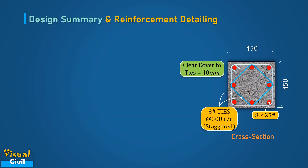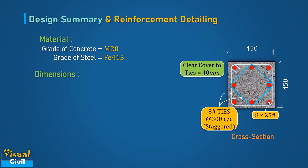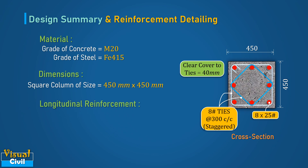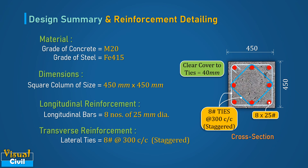Finally, let us summarize the design and the reinforcement detailing. An axially loaded rectangular short column is designed with M20 grade of concrete and Fe415 steel. The column is designed as a square column of size 450 mm × 450 mm. Eight numbers of 25 mm diameter bars are provided as longitudinal reinforcement, while 8 mm diameter lateral ties are provided at a spacing of 300 mm center to center.